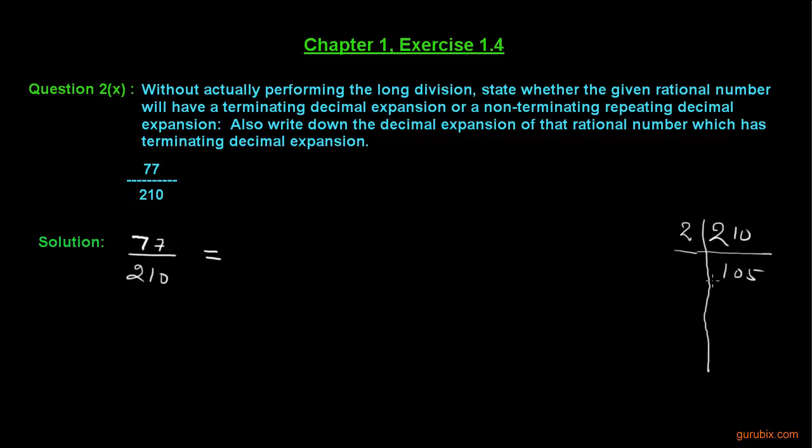So we get 105. This number can be divided by 5, so we get 21. And 21 can be divided by 3 to get 7.